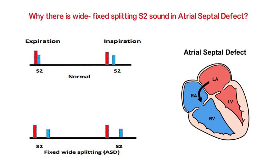In contrast, during expiration, the lungs squeeze blood into the left atrium, generating more blood in the left side of the heart and creating more pressure. Hence, blood goes to the right atrium through the atrial septal defect because of a high pressure gradient, giving the same amount of blood as is in the right ventricle. Hence, a similar amount of blood has to pass through the valves both in inspiration and expiration.